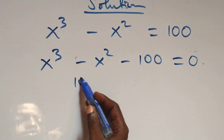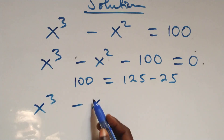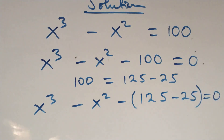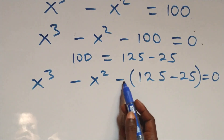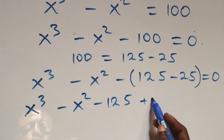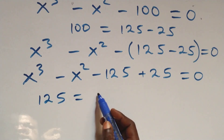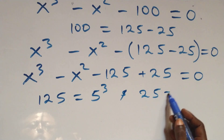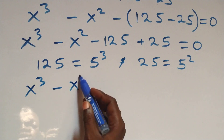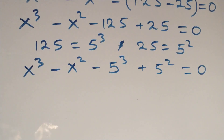The next step, we can express 100 as 125 minus 25. This equation becomes x cubed minus x squared minus bracket 125 minus 25 plus bracket equals 0. Opening the bracket, we have x cubed minus x squared minus 125 plus 25 equals 0. We express 125 as 5 times 5 times 5, which is 5 cubed, and also 25 as 5 times 5, that's 5 squared. This equation becomes x cubed minus x squared minus 5 cubed plus 5 squared equals 0.